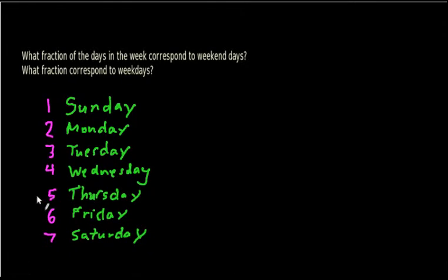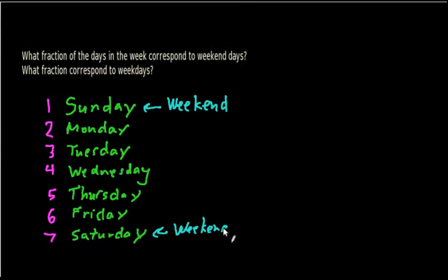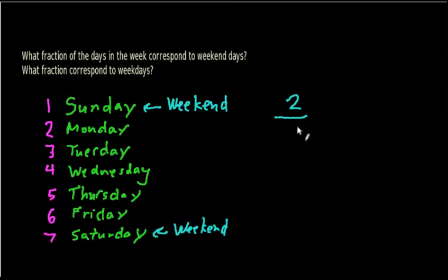Now of these days, what are the weekend days? We know that basically there are two weekend days — Saturday and Sunday are the weekend days. Sunday is a weekend day and the other weekend day is Saturday. And everything else is a weekday. So how many weekend days do we have? We have a total of two weekend days out of seven total days. And so the first answer is that there are two-sevenths of the days that correspond to weekend days — two days out of seven.